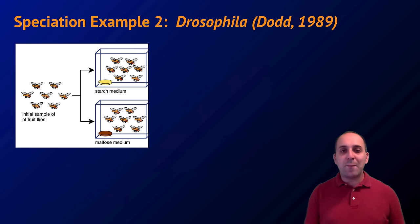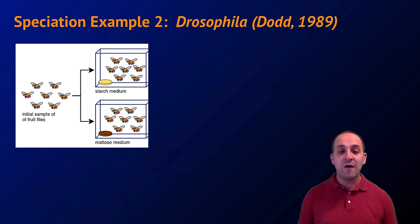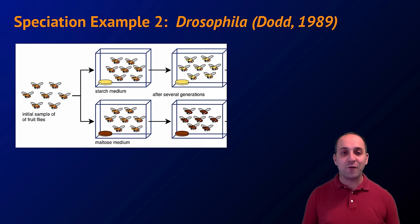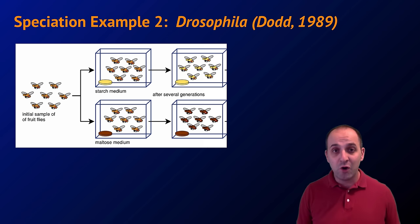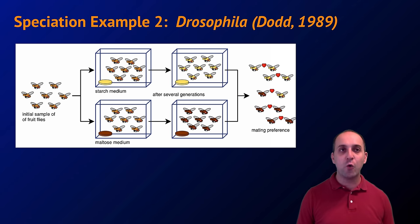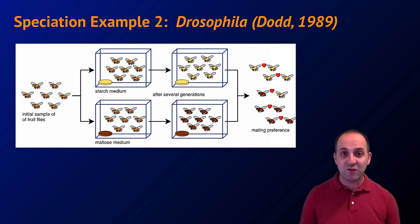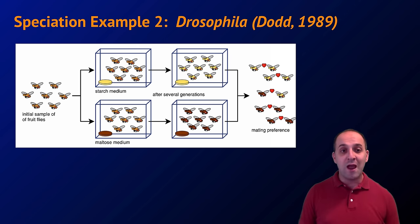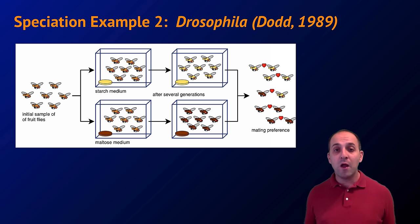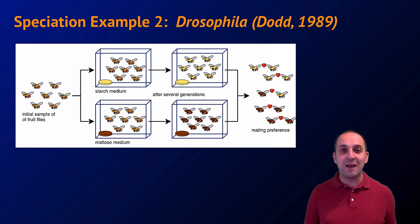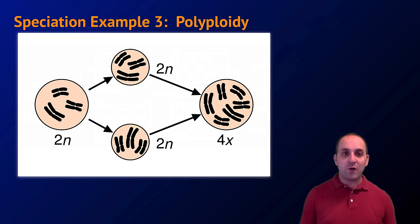A very similar example comes from the lab of Diane Dodd, who took a population of Drosophila fruit flies and separated them into two subpopulations — one grown on starch as a sugar source, the other on maltose. This went on for several generations; with a two-week generation time, you could run 20 generations without batting an eye. When the populations were brought back together, the starch-medium Drosophila preferred to mate with each other, and the maltose Drosophila preferred to mate with each other. There were some interbreedings — these weren't separate species yet — but it shows how speciation barriers can evolve and develop over time.